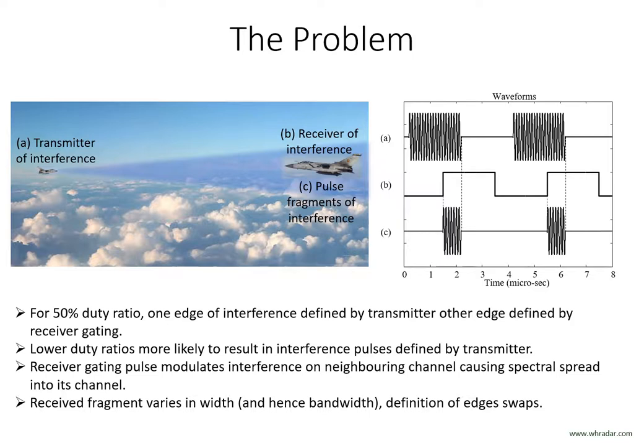If we bear in mind that the bandwidth of a pulse signal is given approximately by the inverse of its pulse width, then narrow fragments of interference may have a very wide spectral spread such that they spread into neighbouring channels. In this case the width of the fragment of interference is likely to be changing continuously, giving a variation in its bandwidth. As the pulsed modulation of the interference and the receiver gating drift in and out of phase, the severity of the problem also varies.